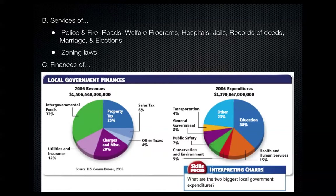Services provided by local government include police, fire, roads, welfare, hospitals, jails, records, marriages, and elections. Clark County has the Metropolitan Police, which also polices the city of Las Vegas and surrounding Clark County areas. North Las Vegas and Henderson are separate cities with their own police and fire departments — they don't have a contract with Metropolitan Police. Within those municipalities, they manage their own police, fire, and roads.